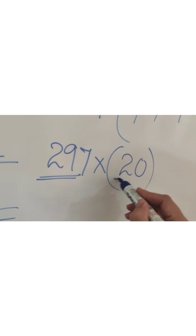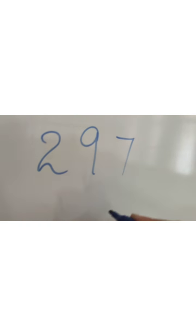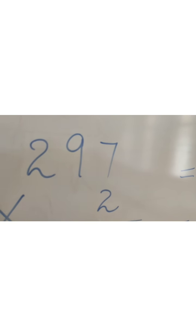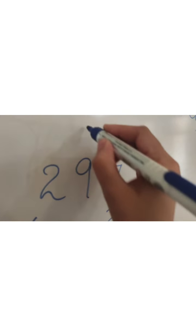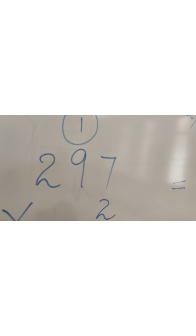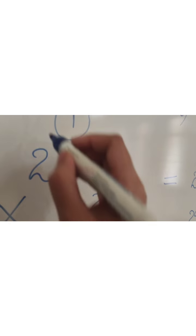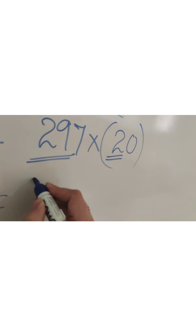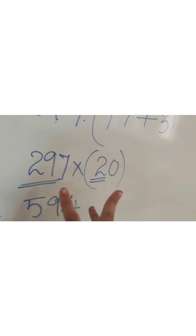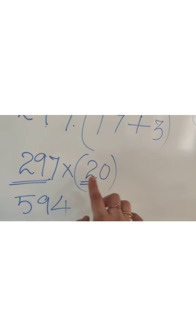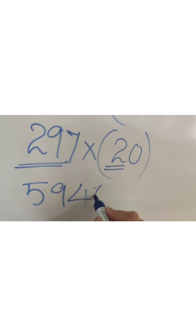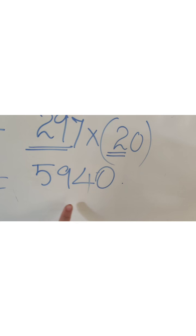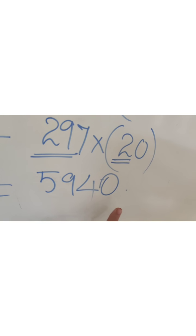To solve 297×20, first multiply 297×2: 2×7=14, 4 down 1 carry; 2×9=18 plus 1 = 19, 9 down 1 carry; 2×2=4 plus 1 = 5. So 297×2 = 594. But one zero is still left from the 20, so we add that zero. The final answer is 5,940.